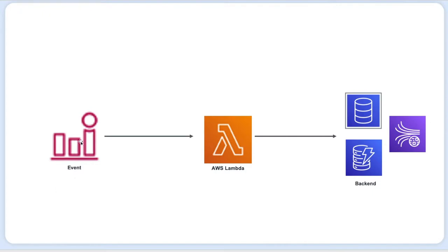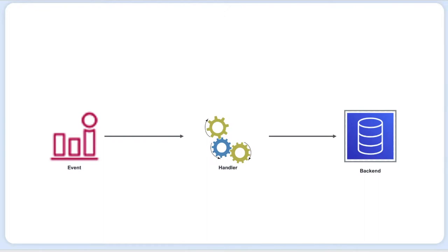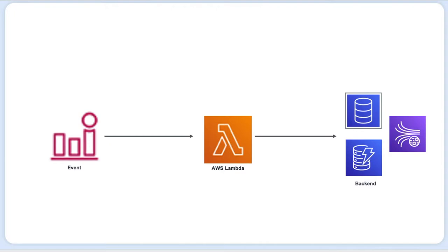Thinking about how this maps inside AWS in terms of serverless: the event remains, and for this we can use AWS API Gateway. For the handler part we use AWS Lambda, which runs your application code. For the backend we can use DynamoDB, RDS, Amazon Kinesis, and many more services.